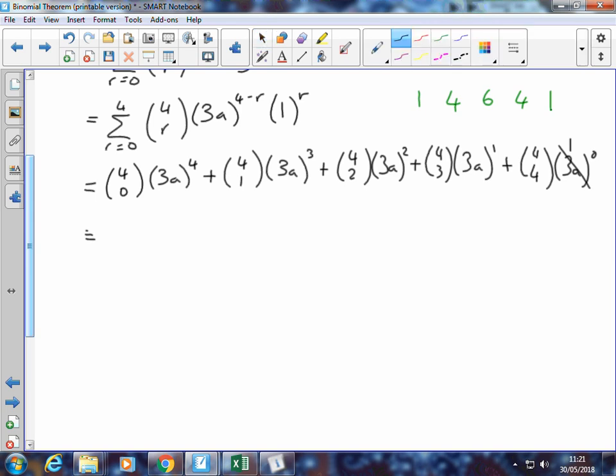So our first term just becomes 3a all to the power of 4. Really important that we're evaluating 3 to the power of 4, which is 81. So our first term just becomes 81a to the power of 4. Second expression here, 4 choose 1 is going to be, our binomial coefficient is 4, multiplied by 3 cubed is 27a cubed.